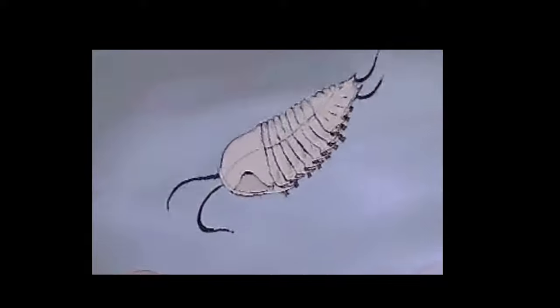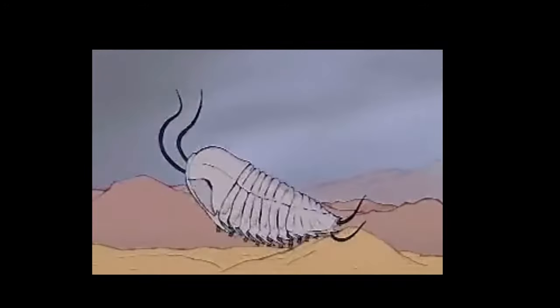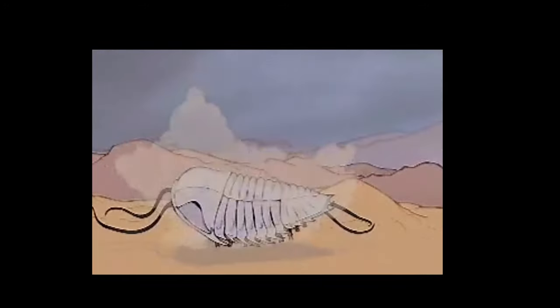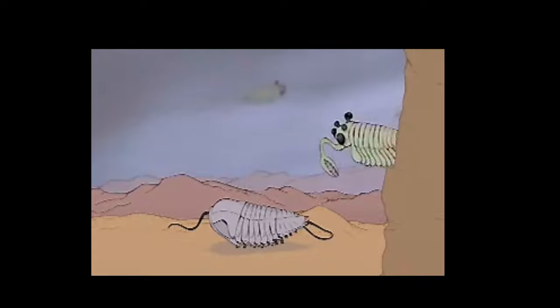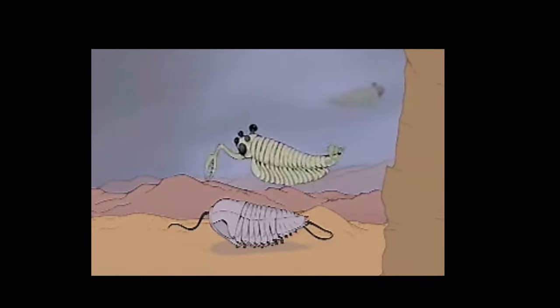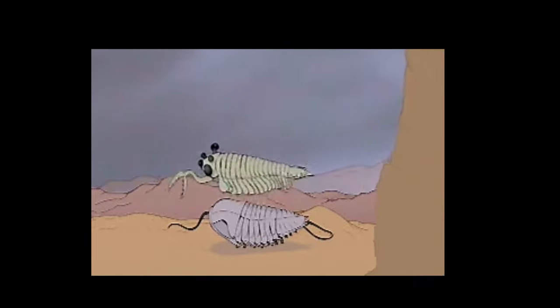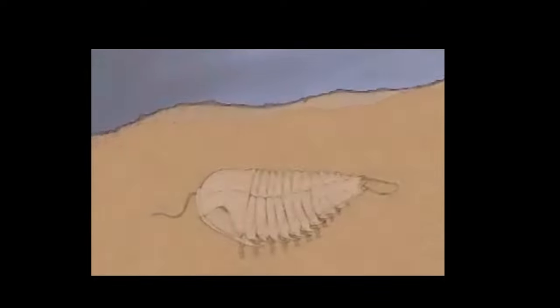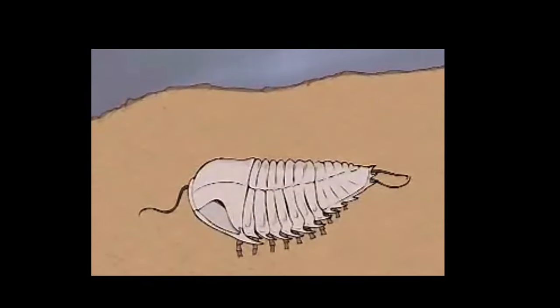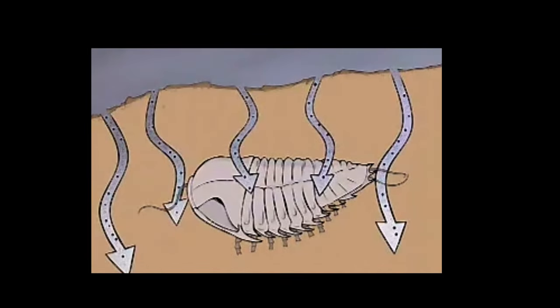This is how a trilobite became a fossil. First, the trilobite dies, then it falls to the bottom of the sea. First you have to get buried in the sand, then the scavengers won't eat you up. Then you have to get buried, and the sediment goes into your body.